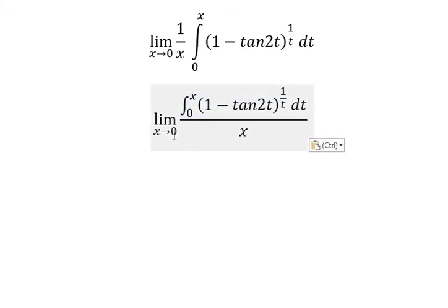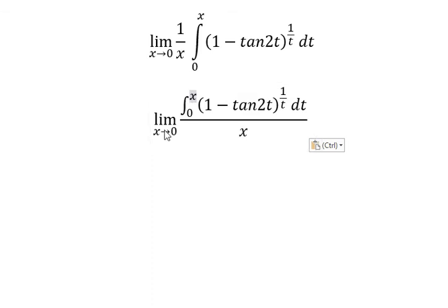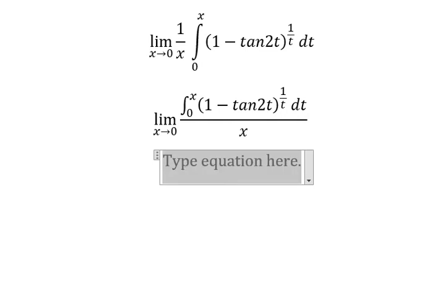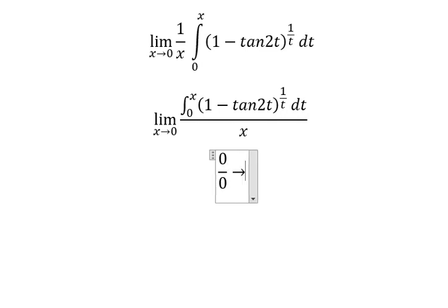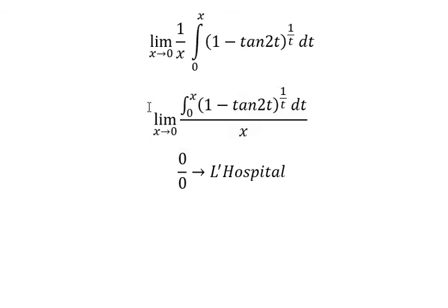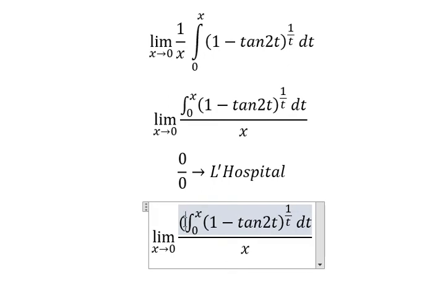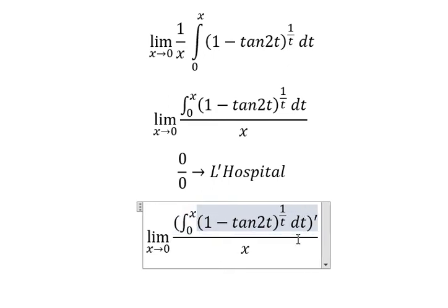When x approaches zero, this expression goes to zero, and we have zero over zero. So we can use L'Hôpital's rule — that means we need to take the derivative of the numerator and denominator.